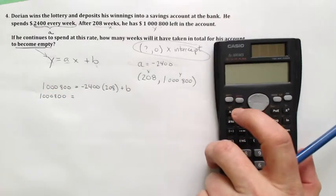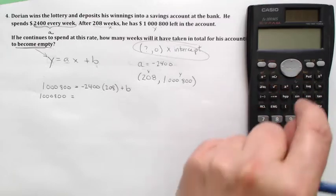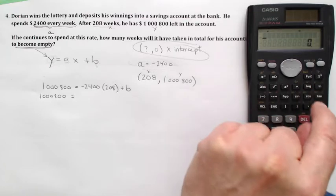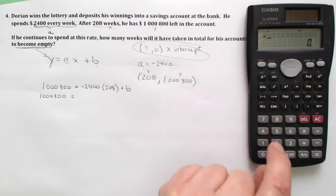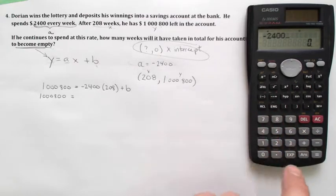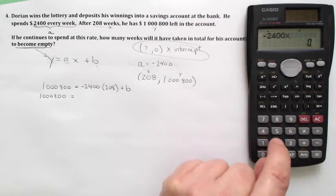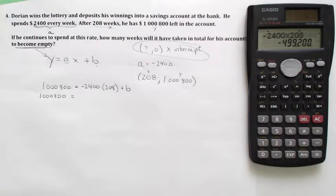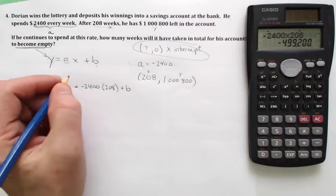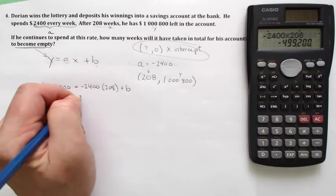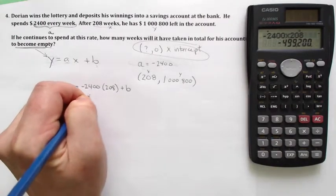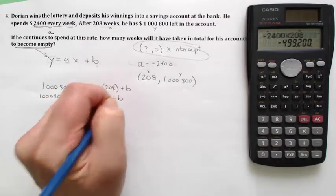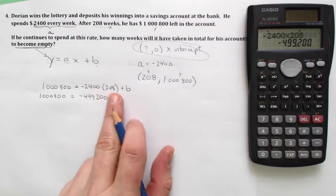Sorry, I should have brought my calculator in before. Okay, and so here comes the multiplication. So let's clear that up. Negative $2,400 spent every week for 208 weeks gives me negative $499,200 plus b. 208 weeks—what is that, four years? He spent half a million bucks, almost.